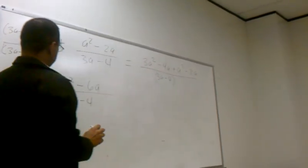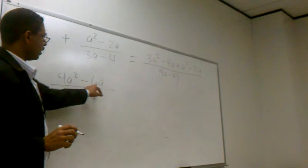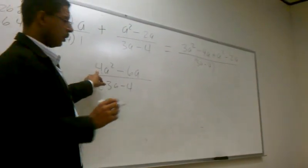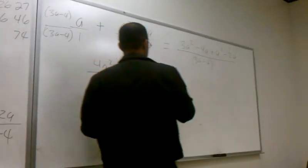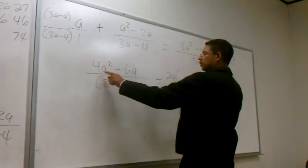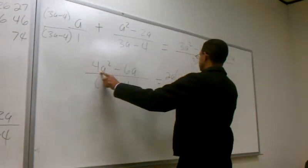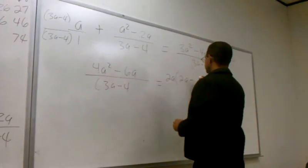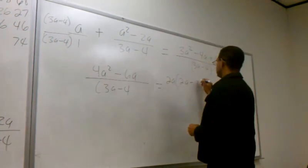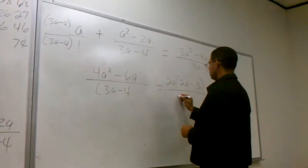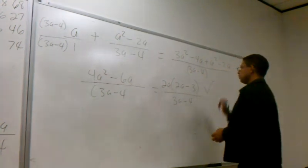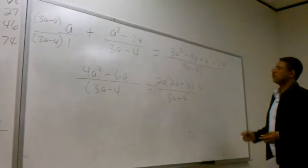Now look at my numerator. Do these terms have anything in common? 2a. Take out a 2a. And then I get 2a times 2a minus 3, all divided by 3a minus 4. There you go — you're finished.